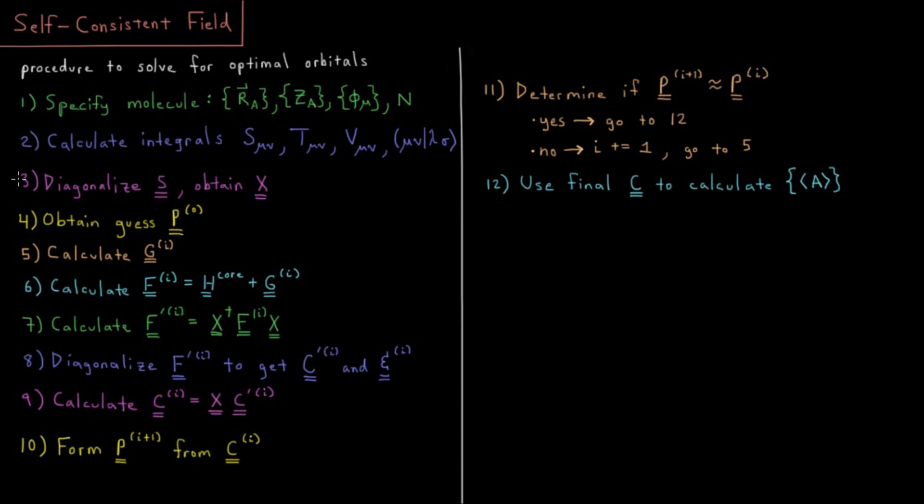Then step four is we are going to obtain a guess density matrix. So, there are various ways of getting this guess density matrix. The most common way is what you call a core guess. Basically, you assume that the electrons don't interact with one another, that all of the two electron parts are zero.